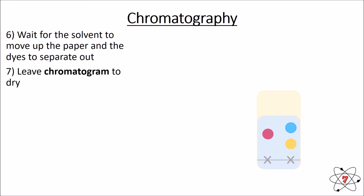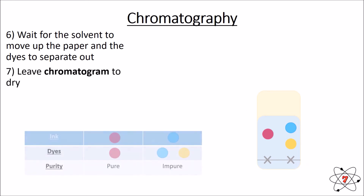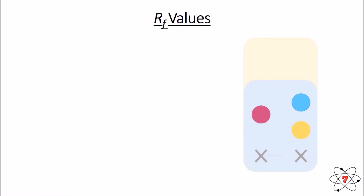We then leave what we call a chromatogram to dry. We can see that when we had a purple ink and a blue ink, they separated out into different dyes. Our purple ink only had one dye within it, so it is a pure substance. Our blue ink, on the other hand, had a blue and a yellow dye within it, making it an impure substance because there is more than one substance that makes it up.